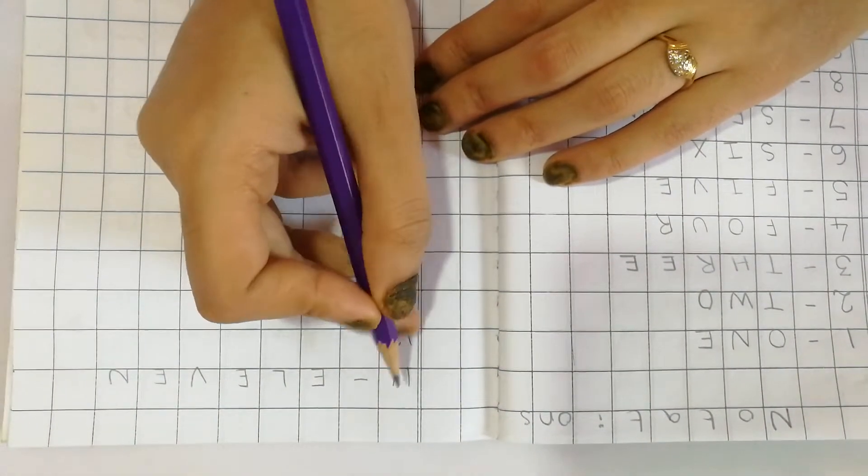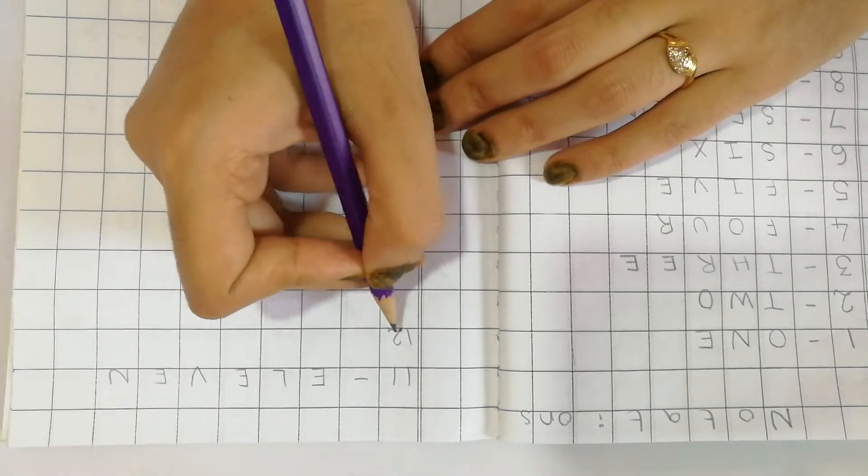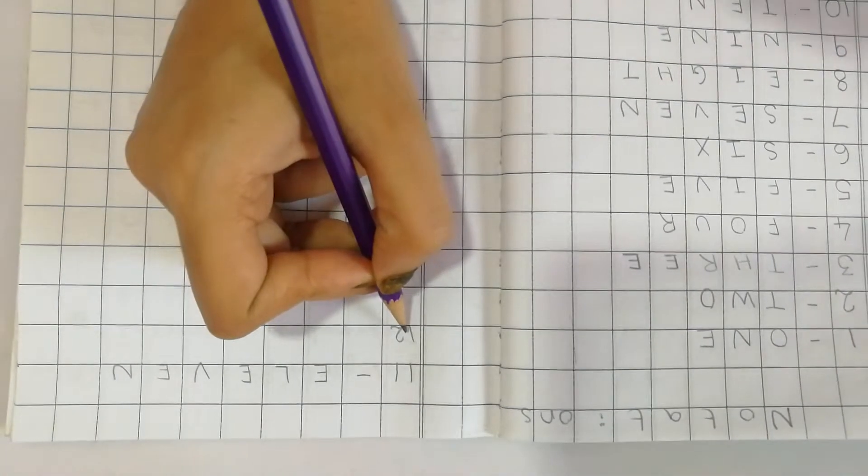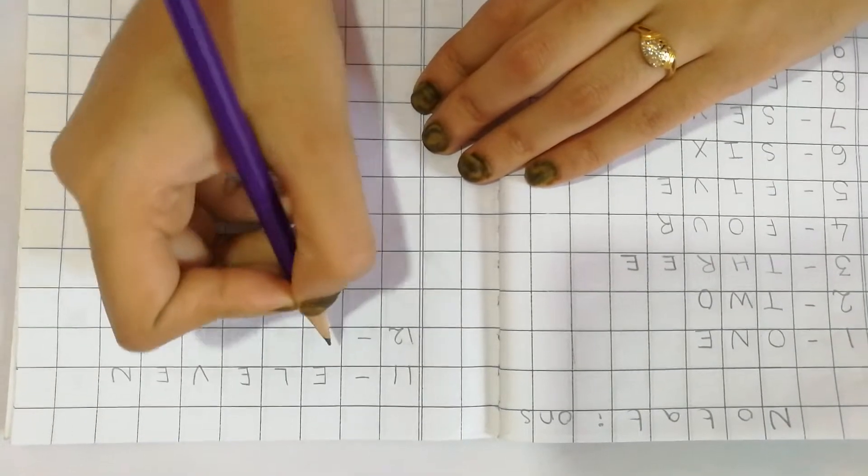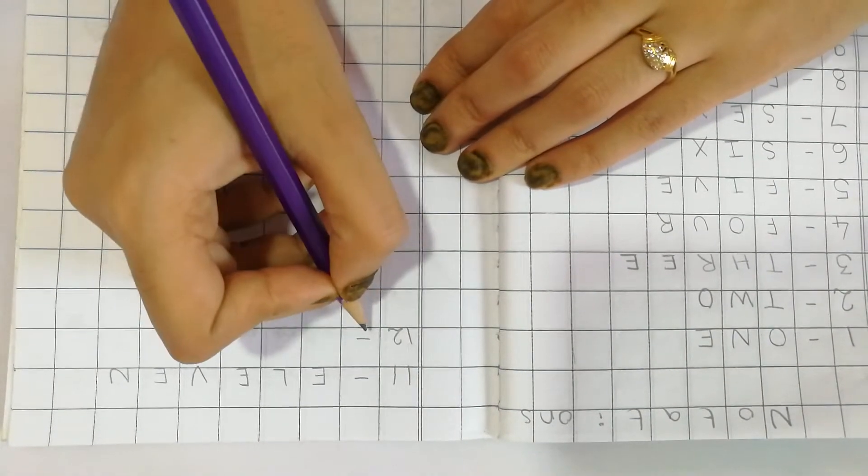What will you write? On a good page, you will write number 12. This is the margin line. And what will you write after 12? 12 dash. Ready? 12 dash.